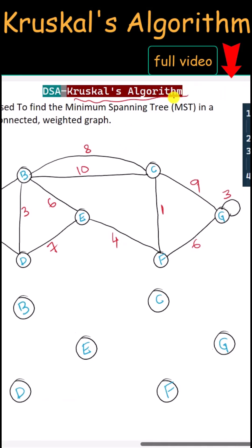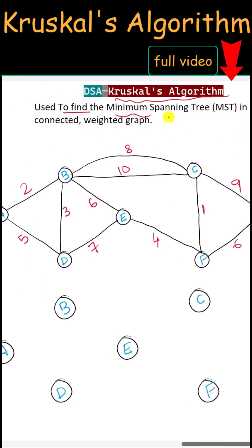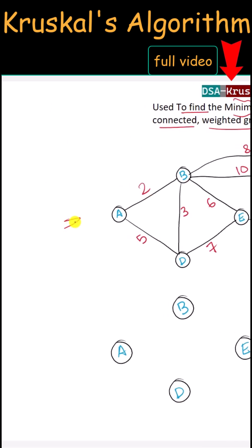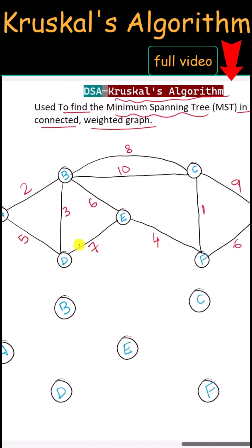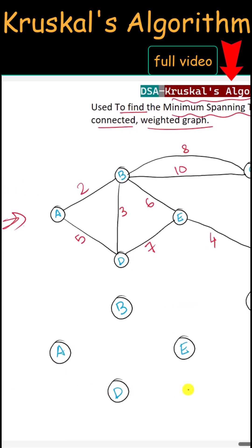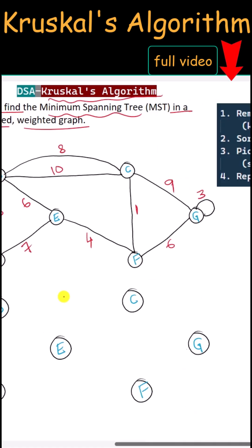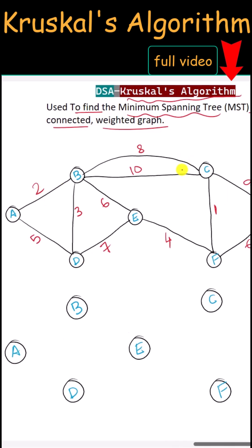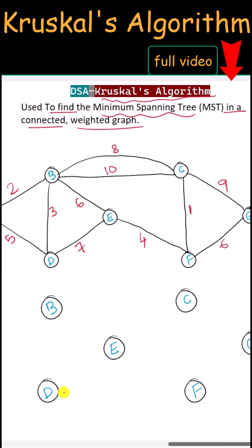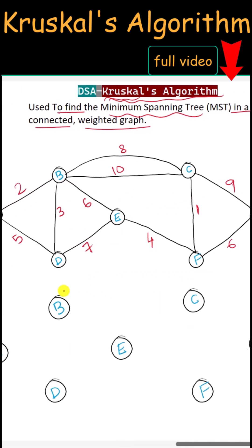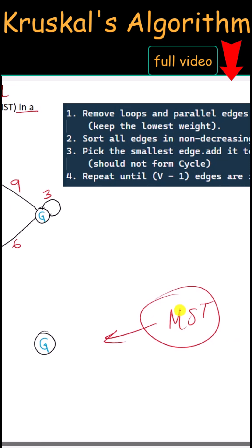Let's talk about Kruskal's algorithm to find the minimum spanning tree in a connected weighted graph. Here is our connected weighted graph, and from this graph we're going to create a minimum spanning tree. In our minimum spanning tree we're going to have the same number of vertices as the graph. We're going to use Kruskal's algorithm to select edges so that we have minimum weight in our spanning tree.